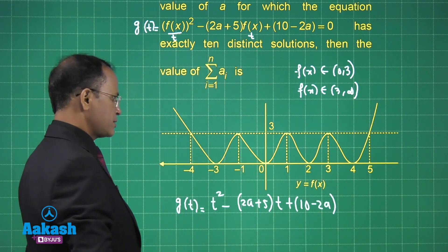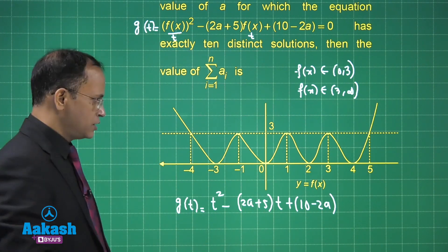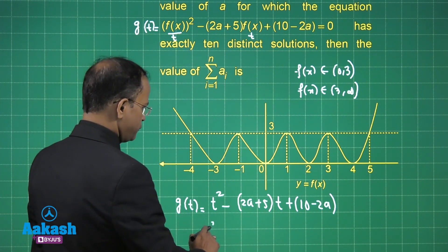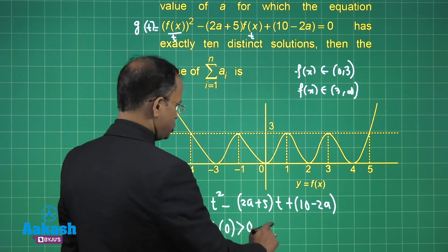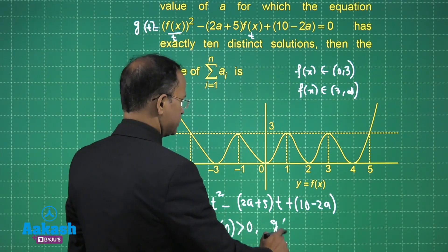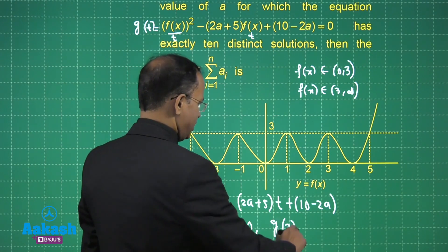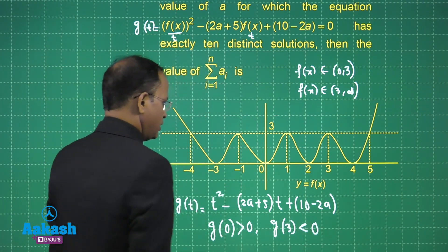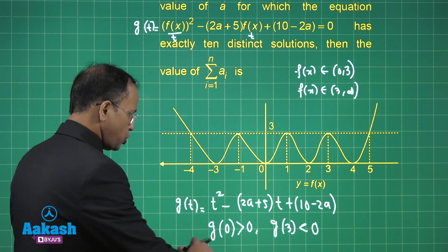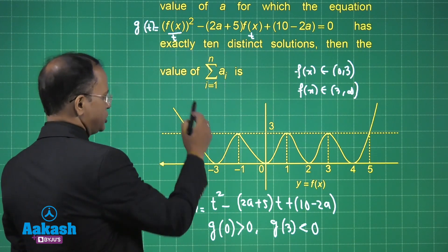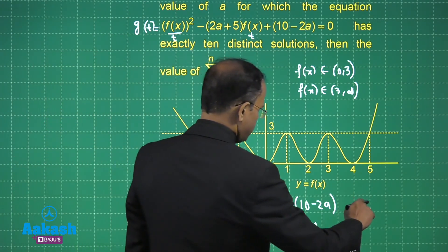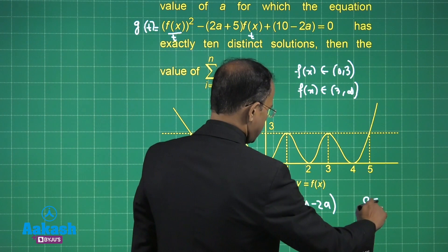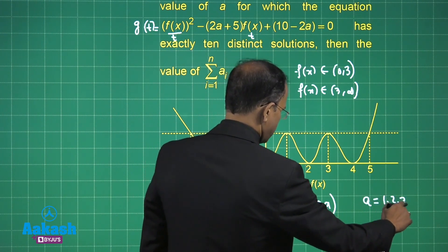In this case, g(0) is always going to be greater than 0, and g(3) is always less than 0. So we solve these two inequalities by substituting the values using the wavy curve method, and we come out with the values a = 1, 2, 3, 4.